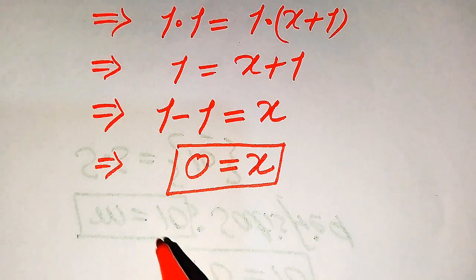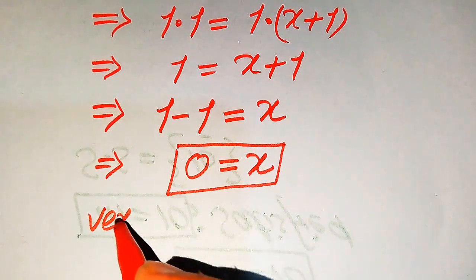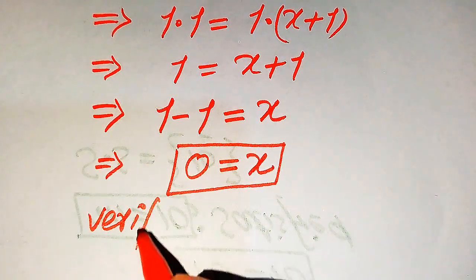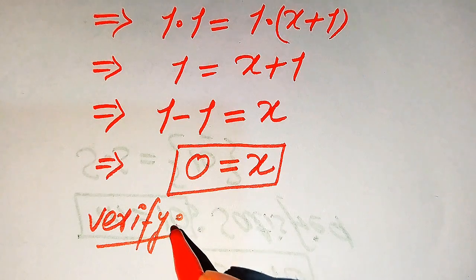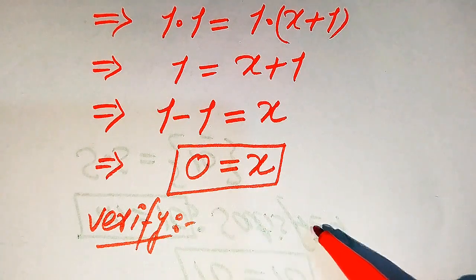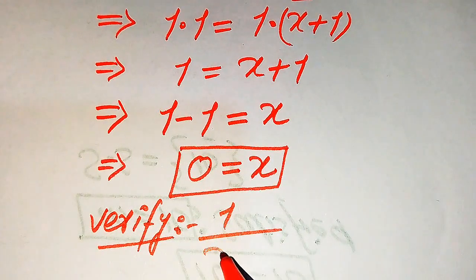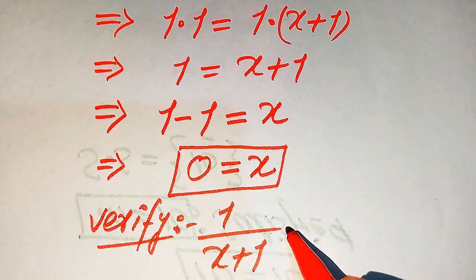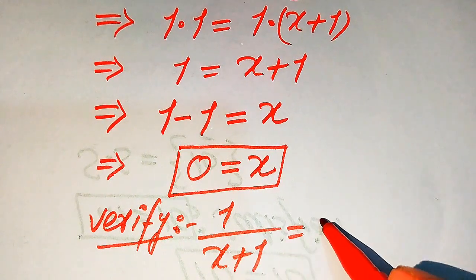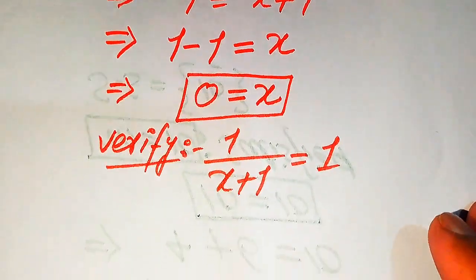This means that we have only one root of the given equation and that is x is equals to 0. We need to verify this root and check whether it is the solution of the given equation or an extraneous root. For this we copy down the given question statement: 1 divided by x plus 1 is equals to 1.